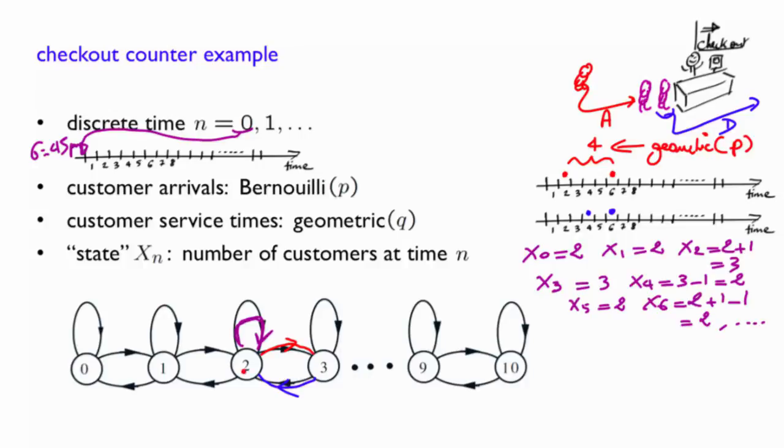So again, assume that you are currently in state two with two customers in the queue. The probability of next going to state three, here, with one more customer in the queue, is simply the probability of having one arrival and no departure. On the other hand, the probability of being here and going in transition next here corresponds to one departure and no arrival. Finally, the system can stay in state two when there is one arrival and one departure, or no arrivals and no departures.